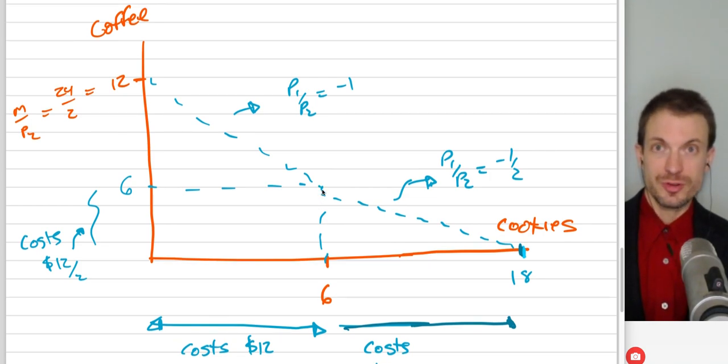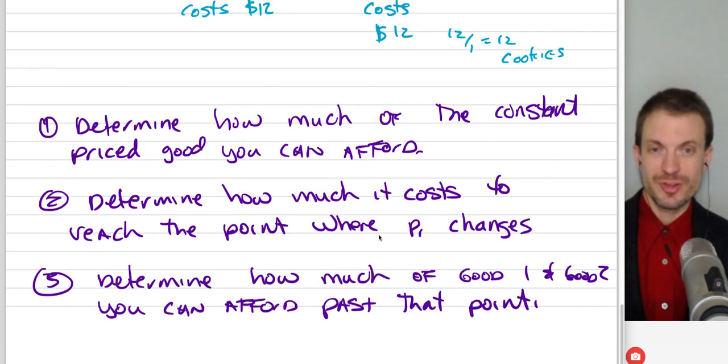Here's the solution. This is what the picture looks like. I'll talk about this in a second. Let me first talk about the strategy. So the strategy is you want to first identify how much of the constant price good you're going to be able to afford. So in this case, that's good two.